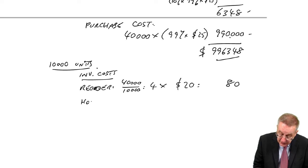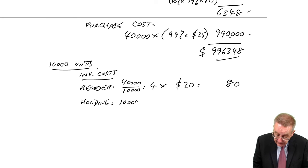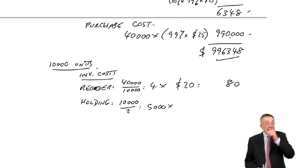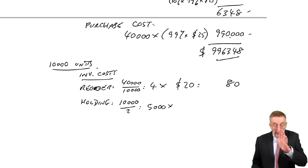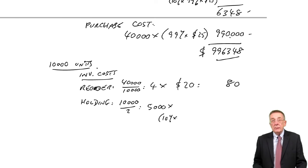The holding cost. Well, if we're ordering 10,000 each time, the average inventory will be 5,000 units. And again here, the order cost will change a tiny bit. It was 10% of inventory value. The cost of inventory, well, it was $25, but we're now getting a 1.5% discount.